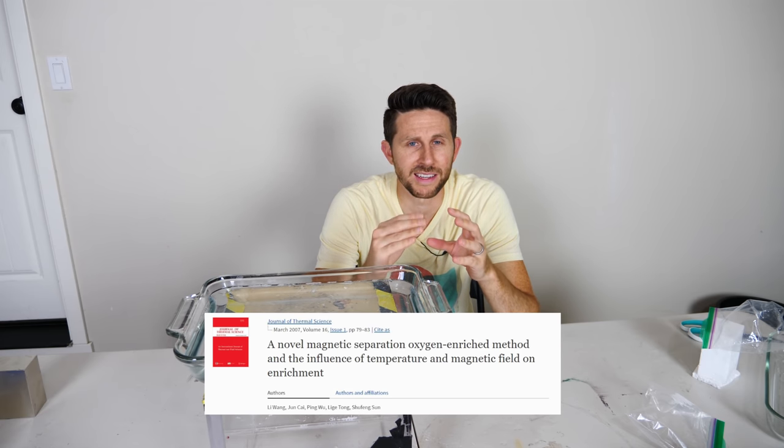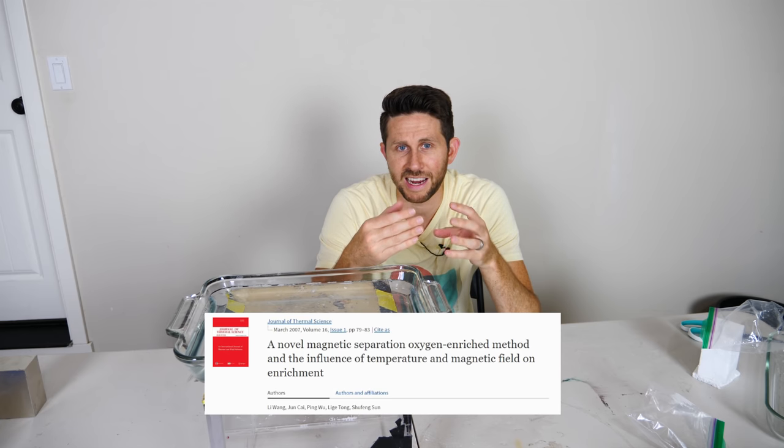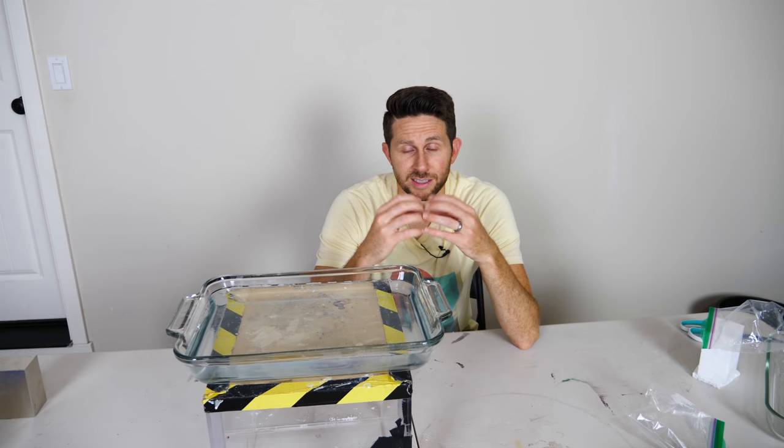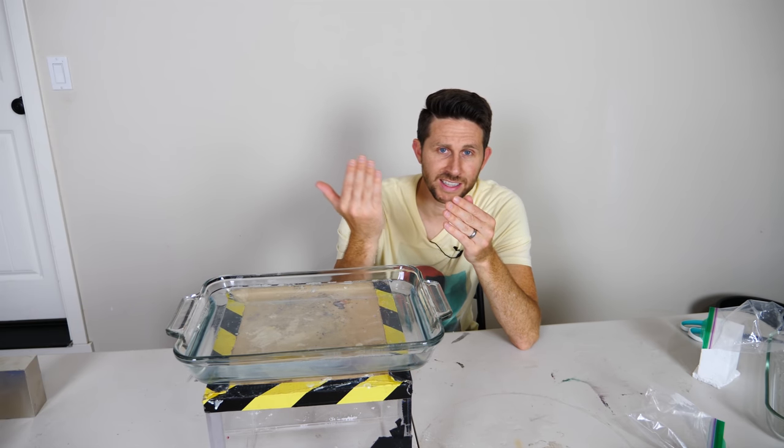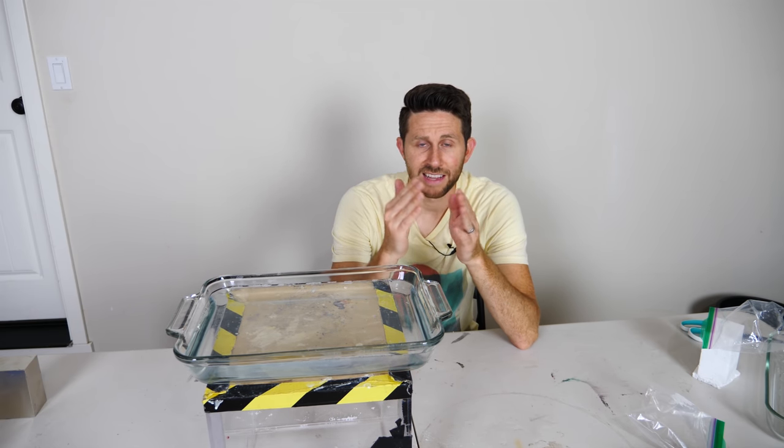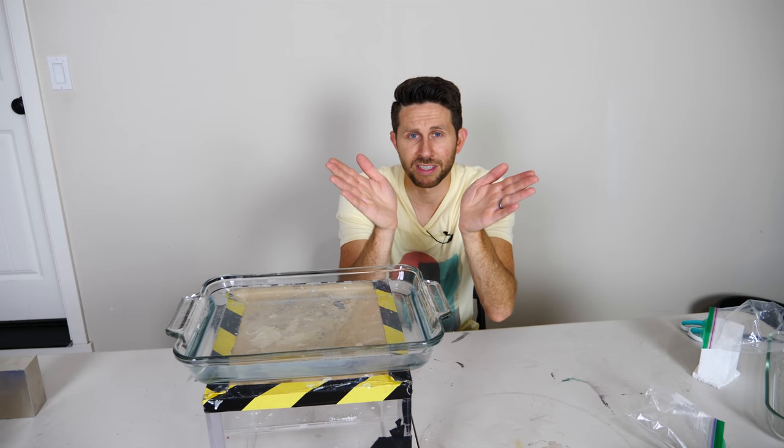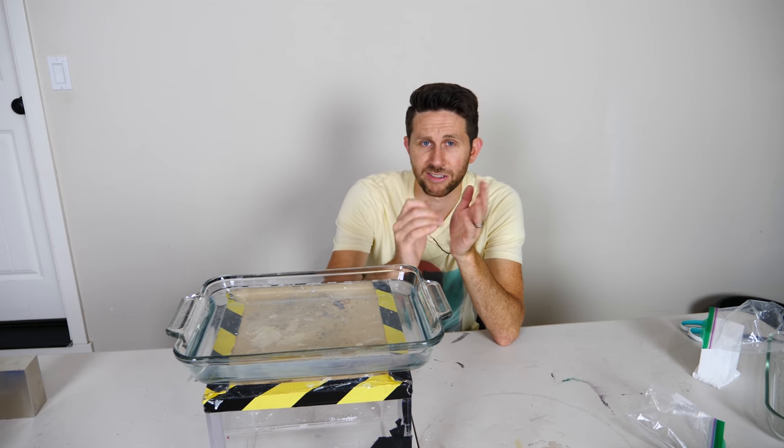In fact, in 2007, there was a paper published on a novel method to enrich oxygen and air using magnets. So what they did is they flowed gas in between two magnets where there was a very strong magnetic flux and the oxygen was deflected towards the magnets and the nitrogen just went straight through.